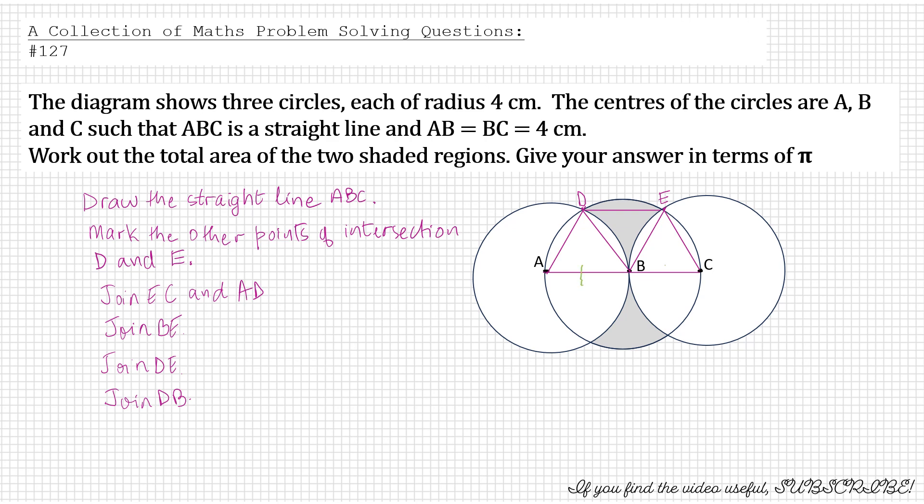So AB equals BC, DA, EC and they are all equal. And BE is also a radius, so is DB. So they are all equal to 4. Now DE, if you notice, if they are all equilateral obviously the angles are 60 degrees. So angle DBE would also be 60 degrees. And that means angle BDE and angle BED would also be 60 degrees. So these three triangles are all congruent, all side lengths 4 cm.